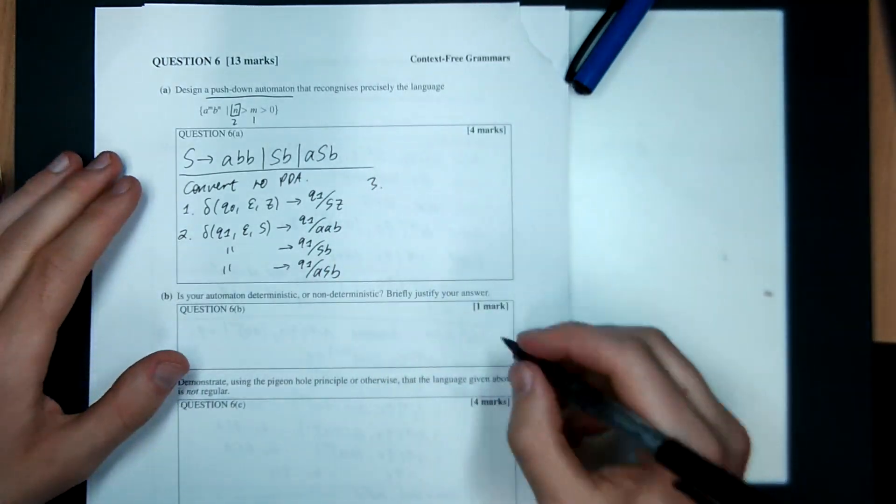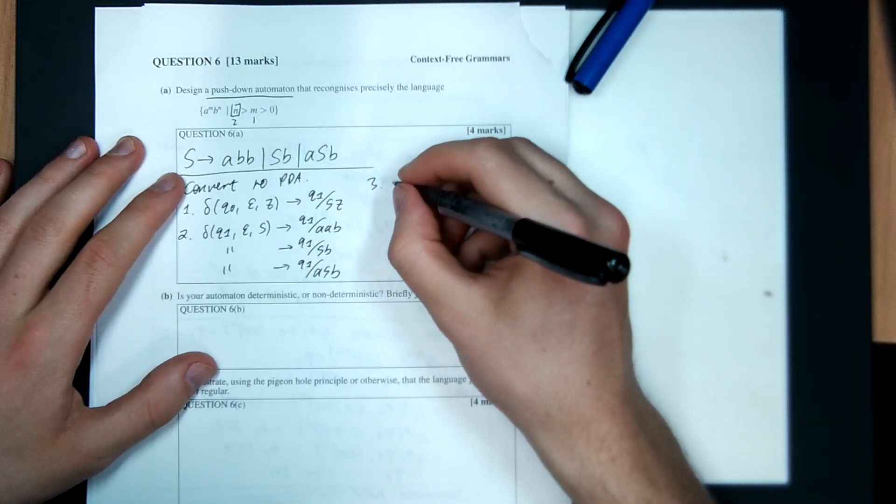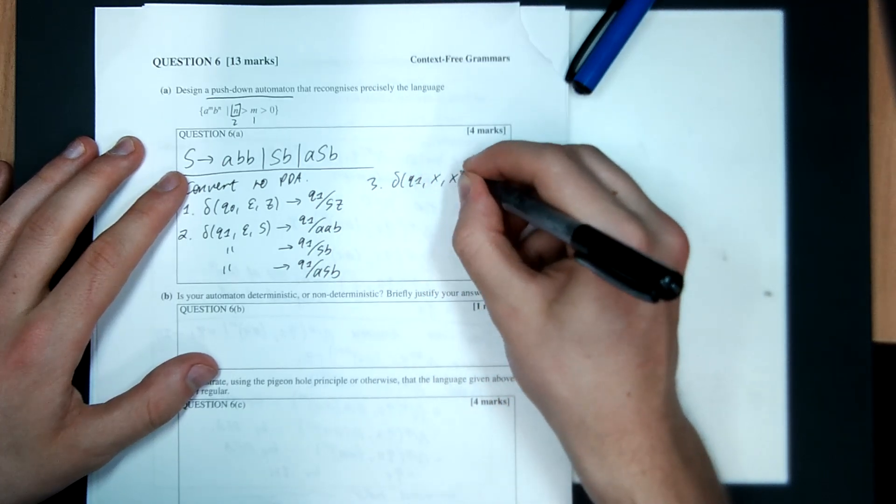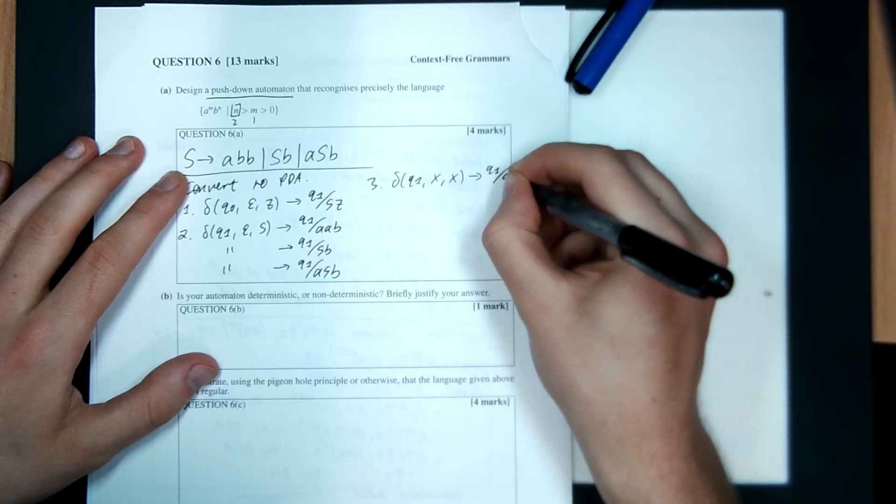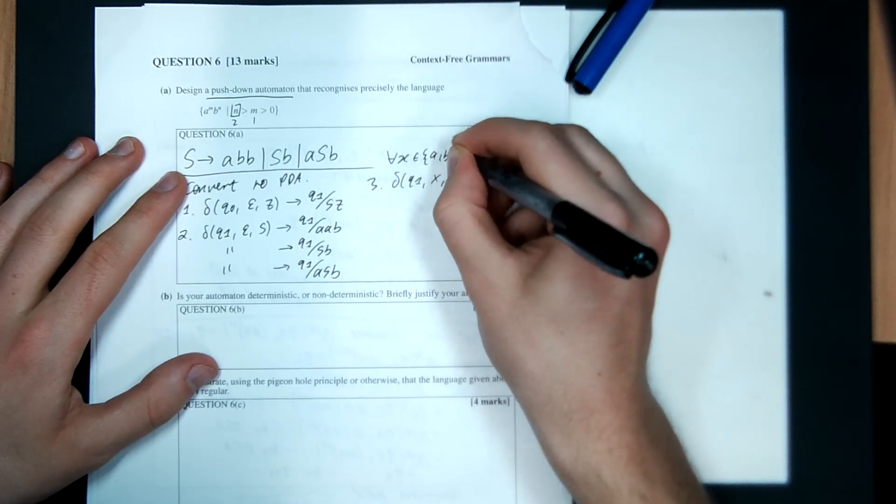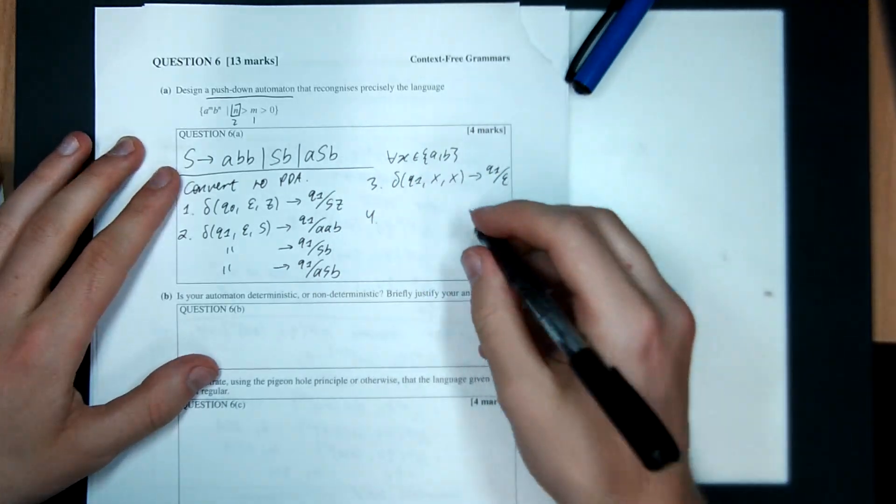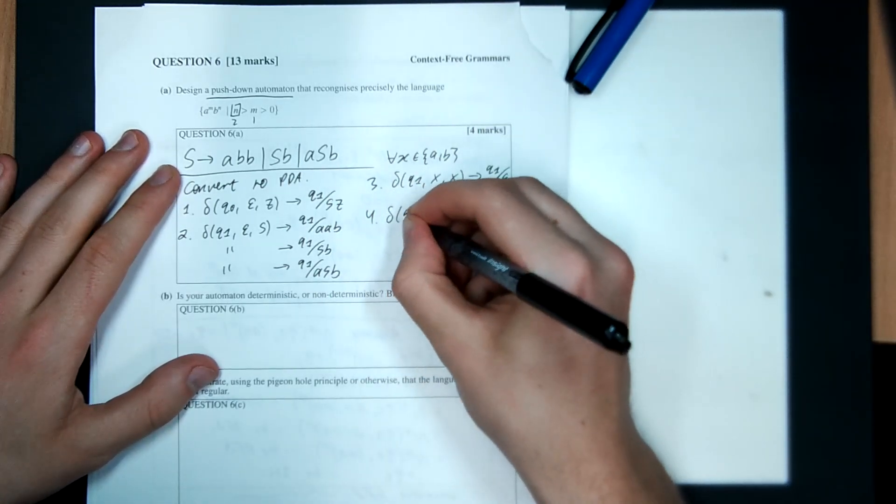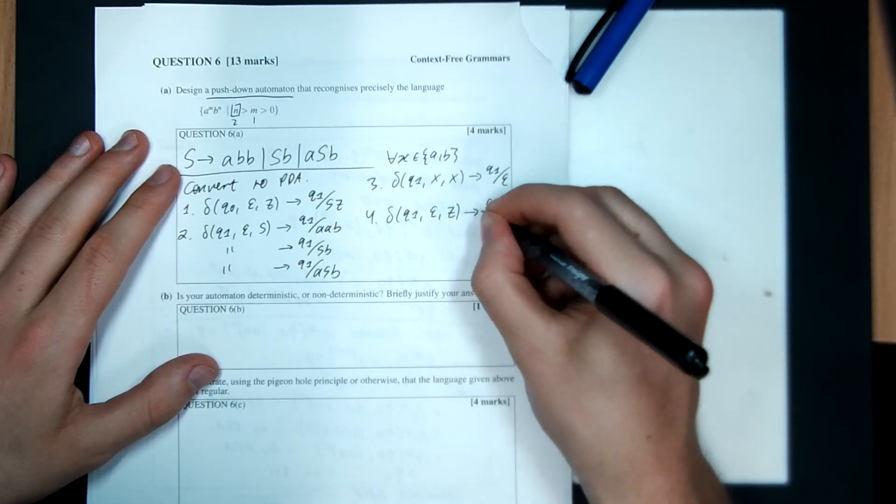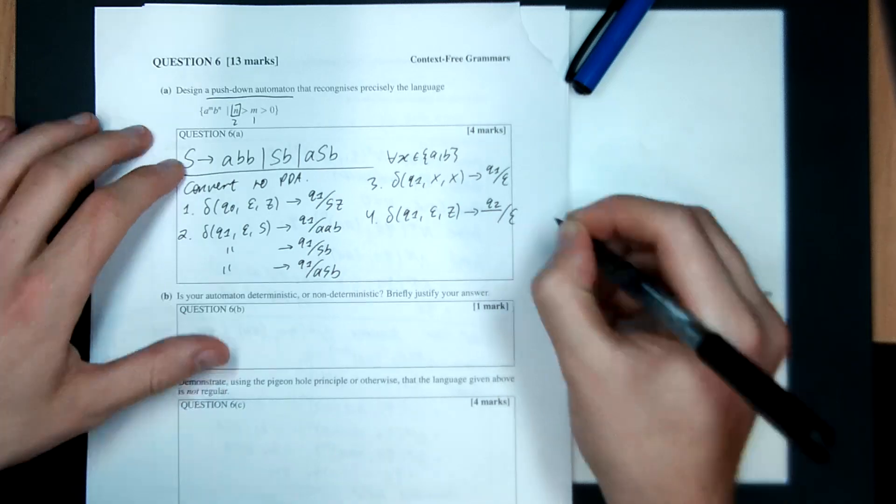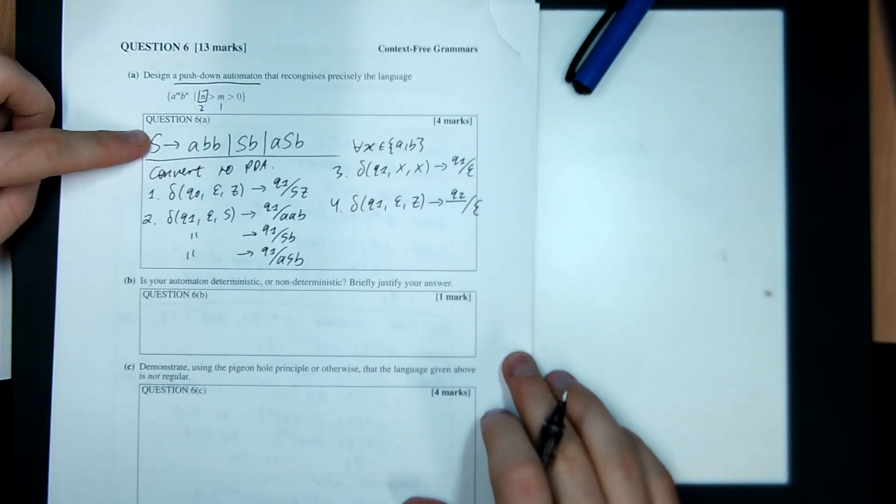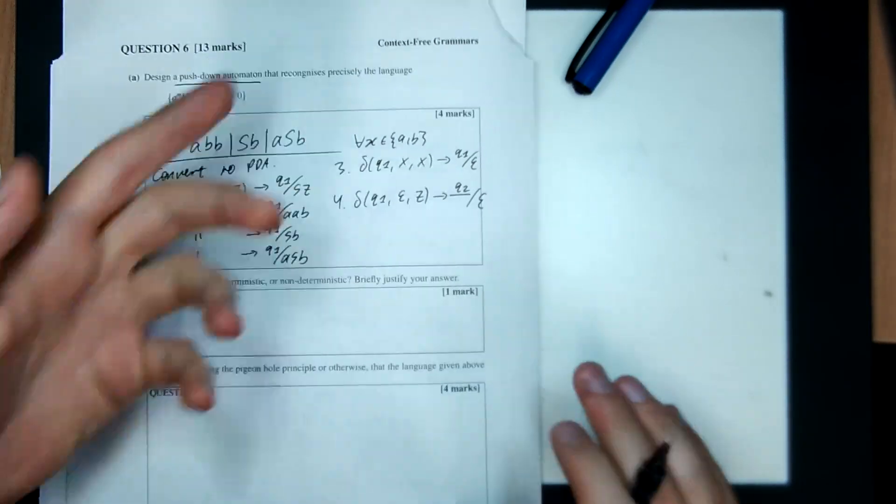Okay, rule three, match and pop terminals. So if I'm in Q1, and I see X on the input and X on the stack, I destroy both. This is for any X, that's either A or B. And step four is accept. So if I'm in Q1, ignore the input, see the bottom stack symbol, transition to Q2, which is a final state, and push nothing back. Cool, so that's like the cheating answer. I didn't have to think about it. I just built the grammar, and then converted it. Awesome.